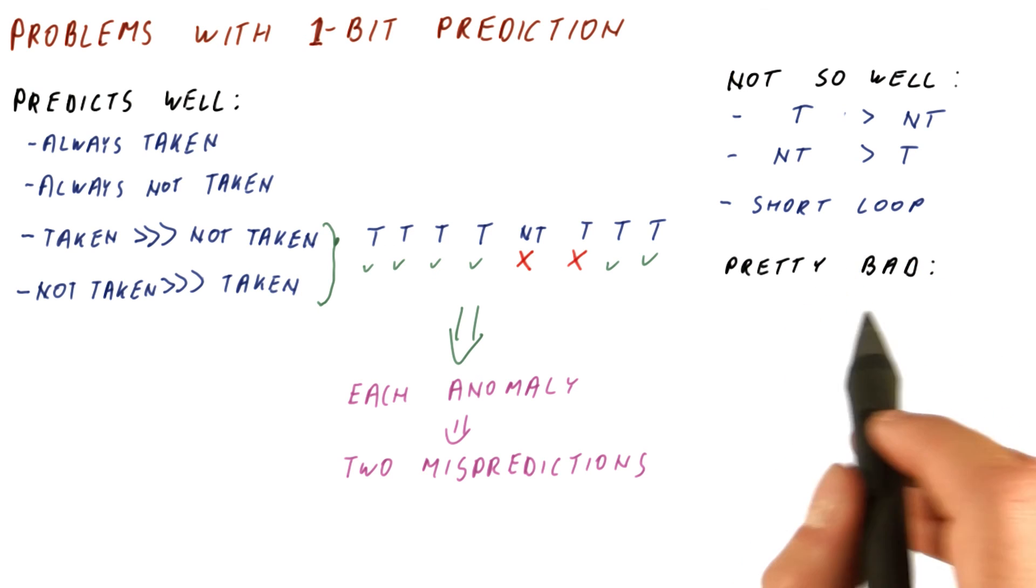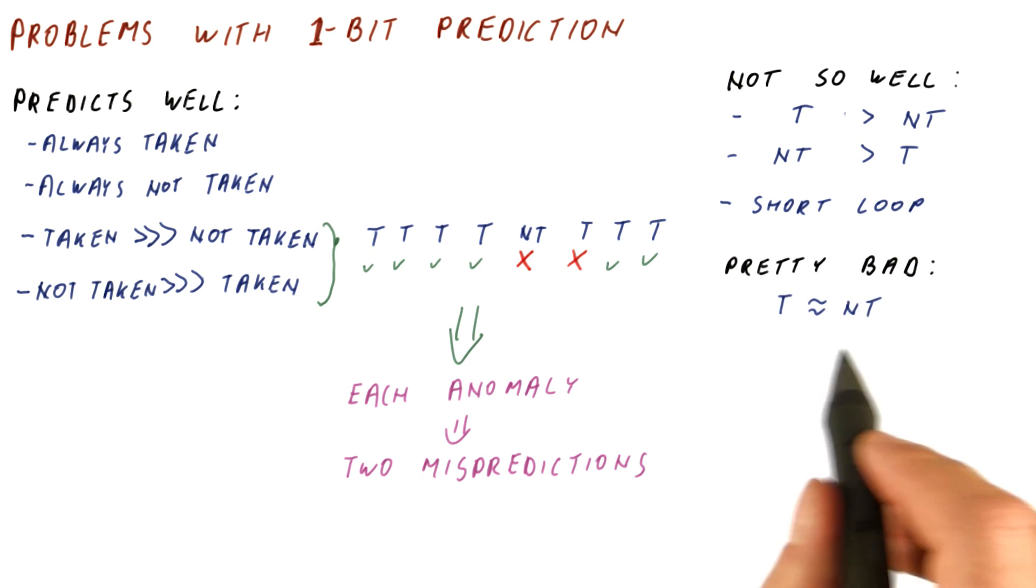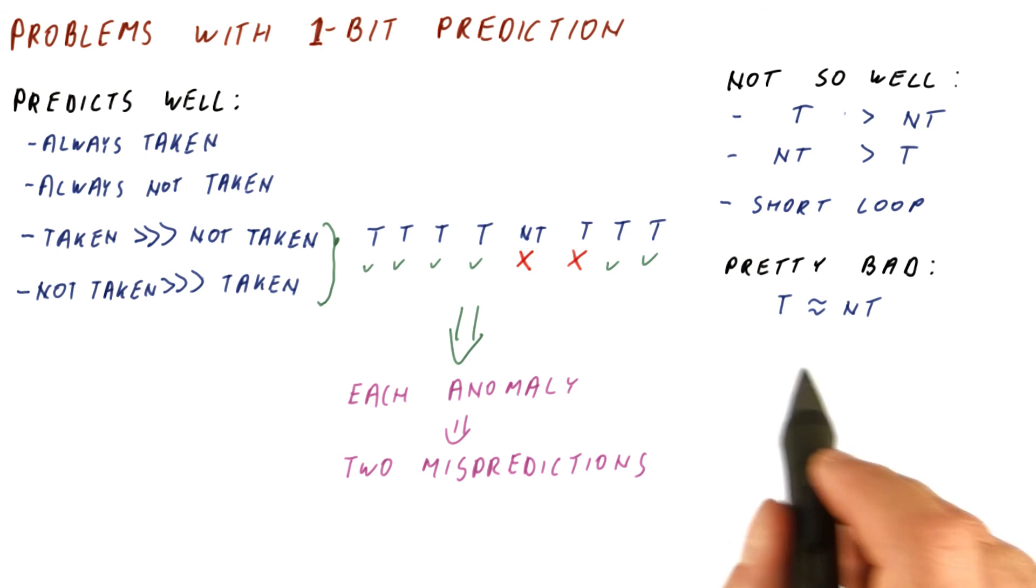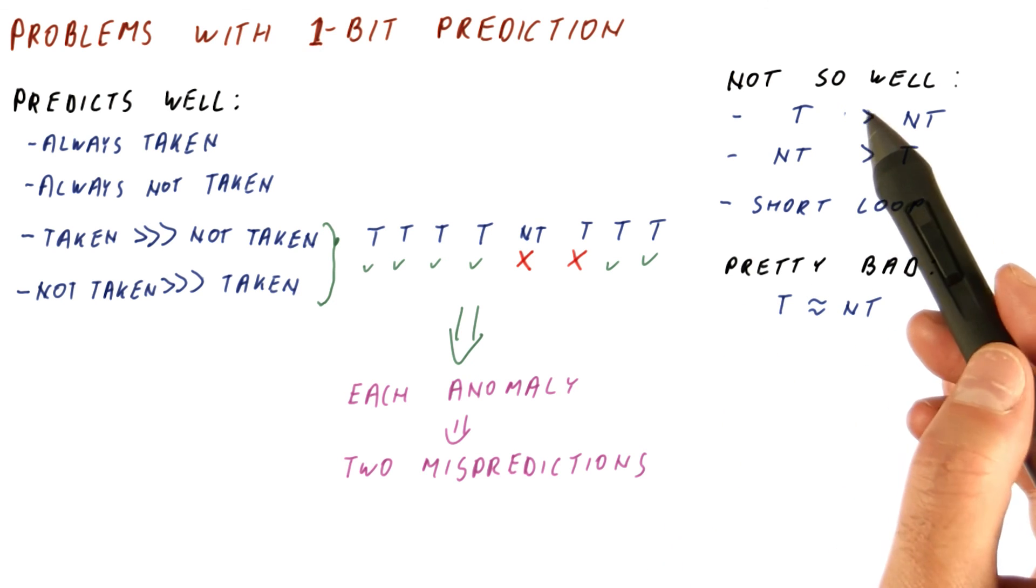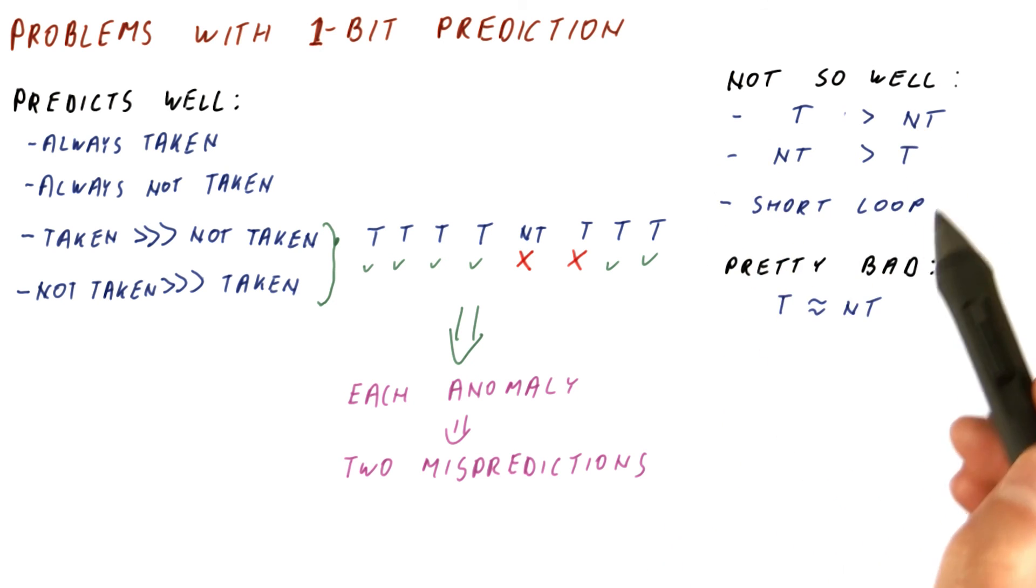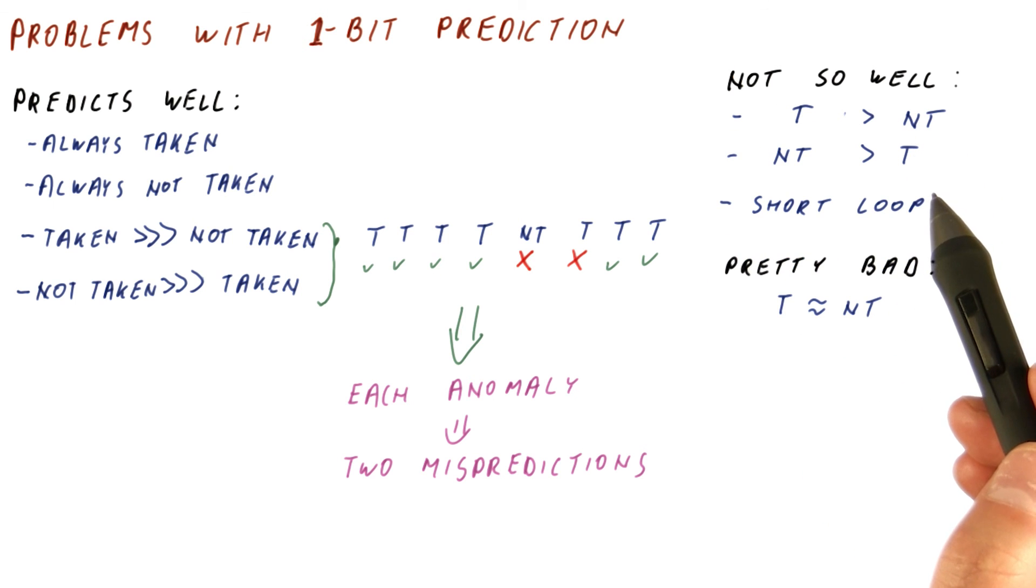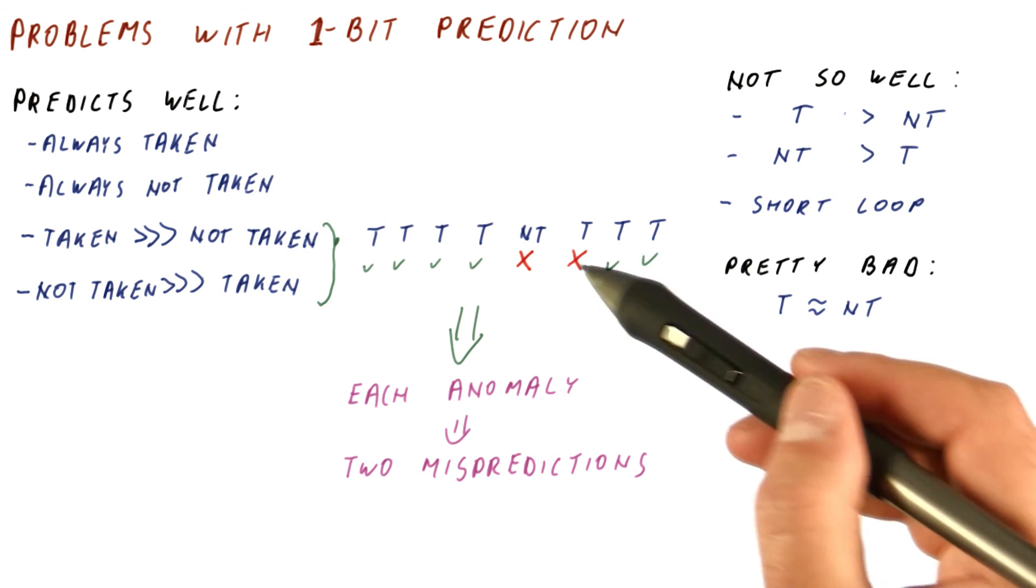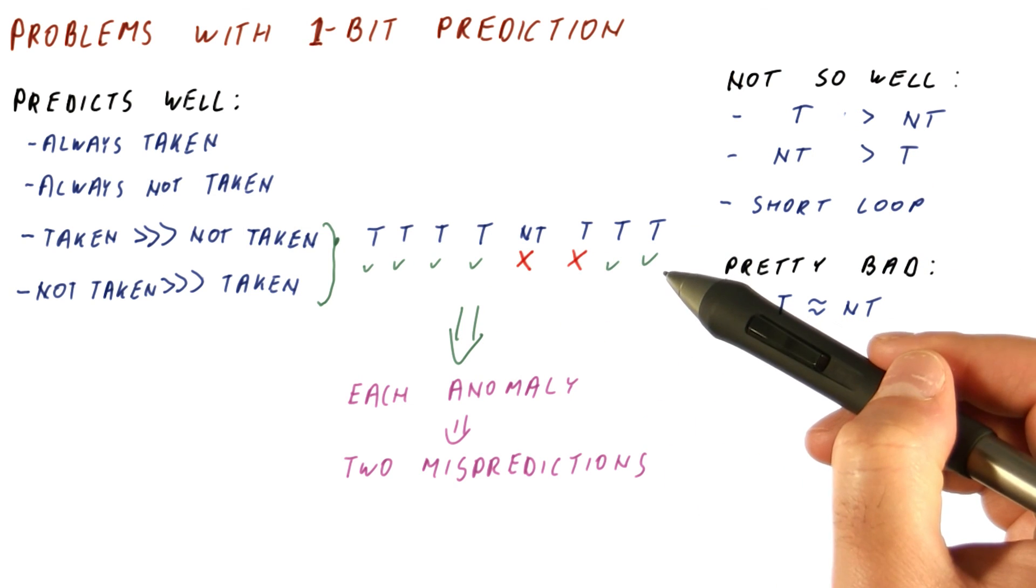the one-bit predictor will be pretty bad when the number of taken and not taken outcomes is similar, yet predictable. We will talk about this more later, but now let's first devise a predictor that will fix this. So can we devise a predictor that behaves similarly well here, but does not mispredict twice whenever there is an anomaly?